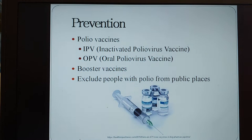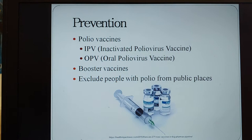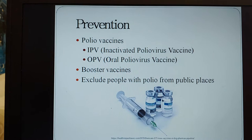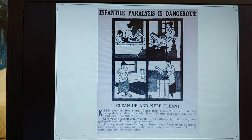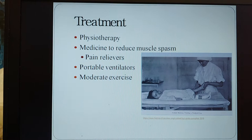As for prevention, polio vaccines are probably the best option — many of us received them when we were younger. There is IPV, the inactivated polio virus vaccine, and OPV, the oral polio virus vaccine, as well as booster vaccines. Another recommendation is excluding people with polio from public places: if your child has polio, keep them out of school, away from public playgrounds and pools. If you're an adult, stay home from work. There was also a public advertisement during the polio epidemic urging parents to keep their house and children clean to reduce the risk of contracting polio.